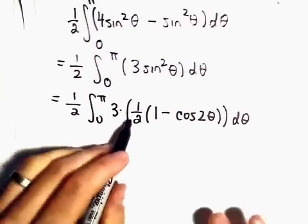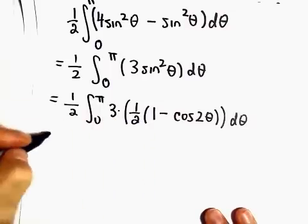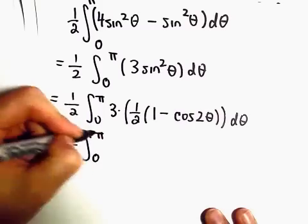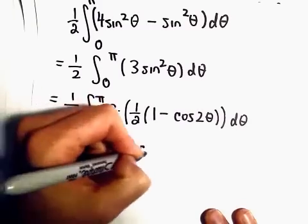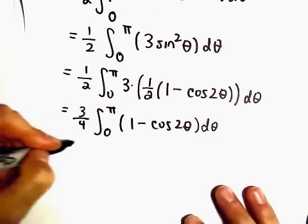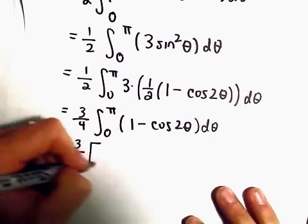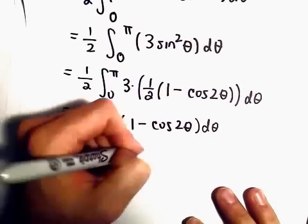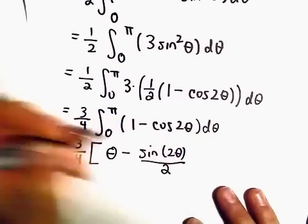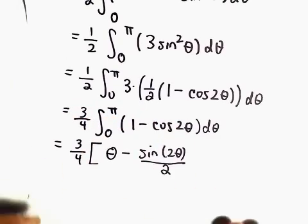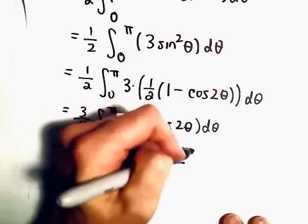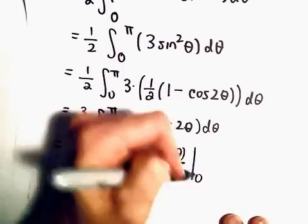And now, let's see. So we'll have 3 halves times 1 half. That'll be 3 over 4. We've got the integral from 0 to pi. 1 minus cosine 2 theta. And this isn't too terrible to integrate. We'll just get 3 fourths. We'll get theta minus sine 2 theta over 2. And you could just integrate the second part using a u substitution. Let u equal 2 theta. And then we're going to evaluate all of this stuff from 0 to pi.